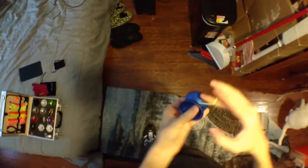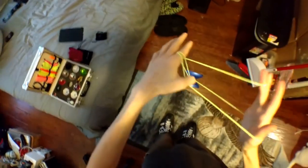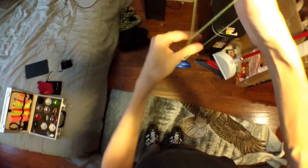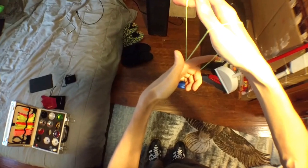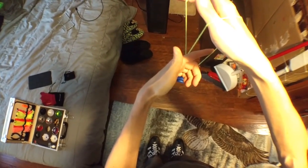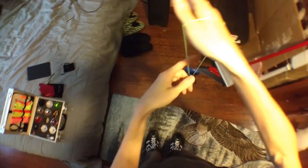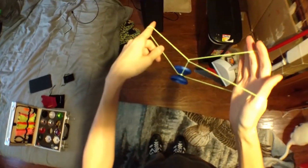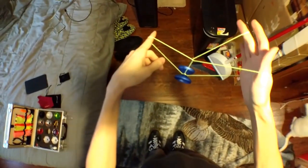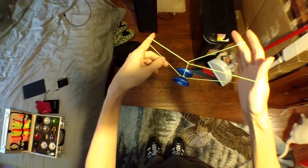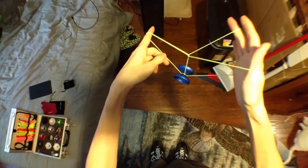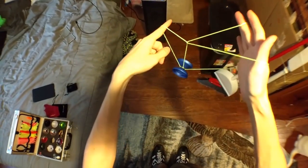Okay, so wrist mount. From the wrist mount like this, put your non-throw hand pointer finger in and you're gonna do an underpass like that. Then you're gonna roll the yoyo back onto this middle string.